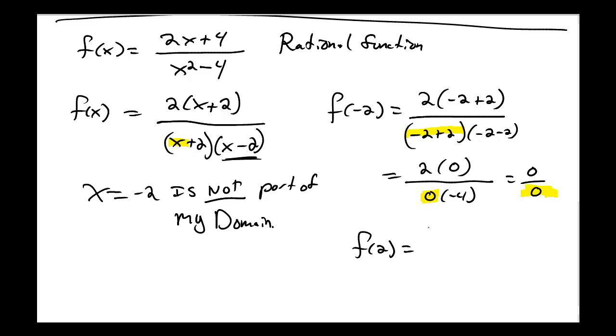There's another number I'm not allowed to plug in and that's going to be positive 2. If I plug in positive 2 on the top, I get 2 times 2 plus 2 divided by 2 plus 2, 2 minus 2. This gives me 8 over 0. Again, I have 0 in the denominator part of my function. I'm not allowed to do that. Division by 0 isn't allowed. So x equals positive 2 is also not part of my domain.